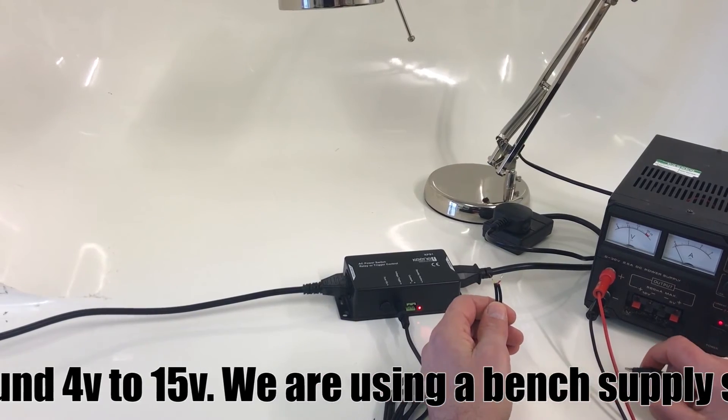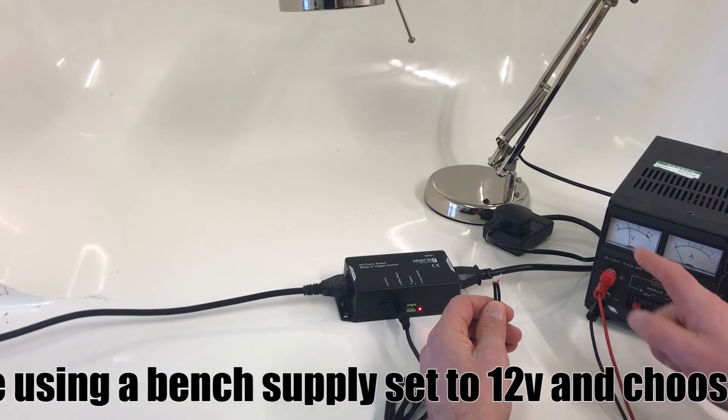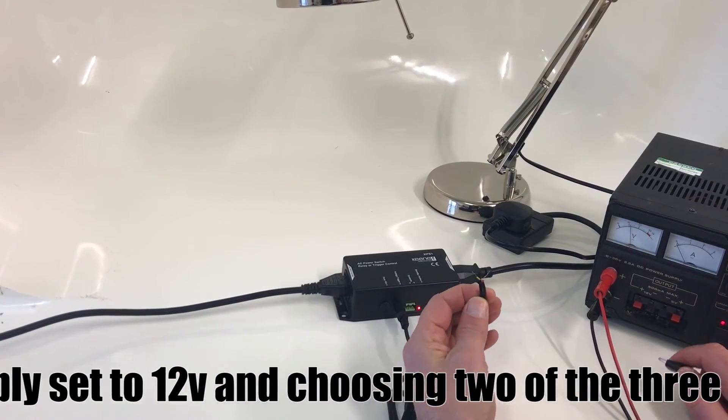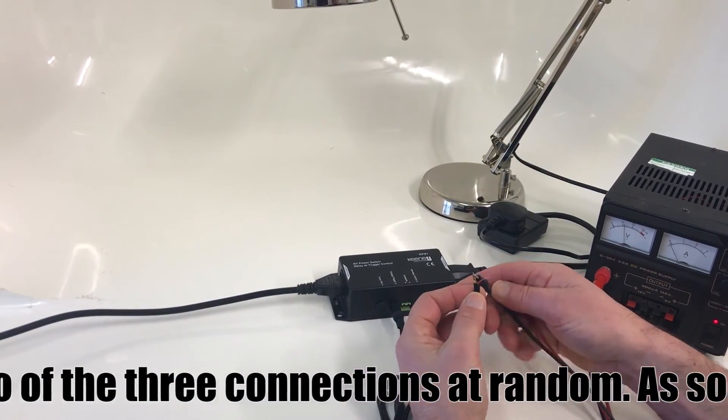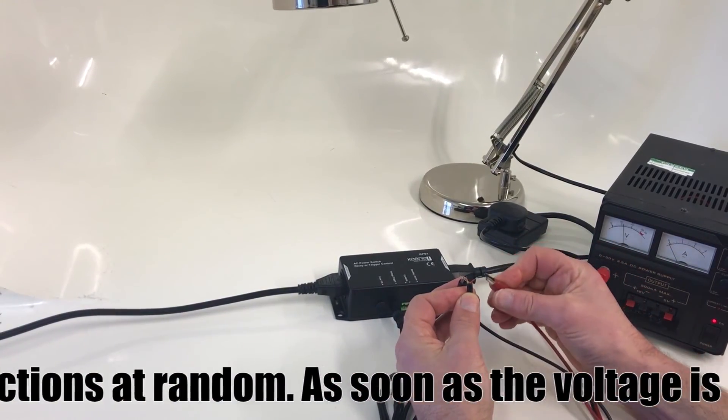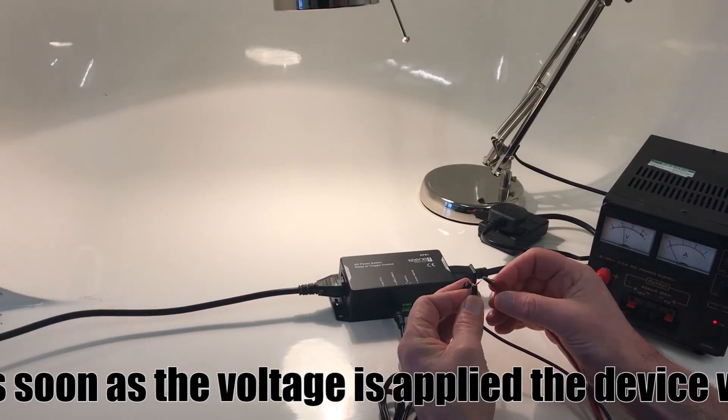And it'll work on anything from about 4 to 15 volts. So I've got a little bench supply here. We'll set that at 12 volts. And I'm just going to pick two of the three connections at random. And there we go. The light comes on.